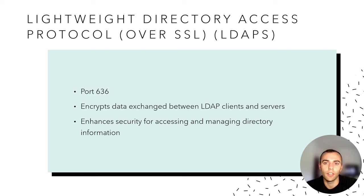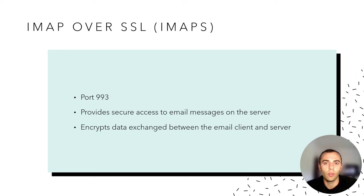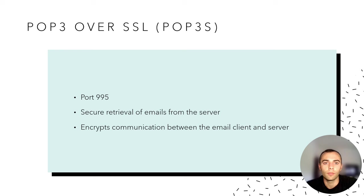Now let's talk about IMAP over SSL, or IMAPs, on port 993. IMAPs is a secure version of IMAP, offering encrypted communication for accessing and managing email messages stored on a server. Next is POP3 over SSL, or POP3S, on port 995. POP3S is a secure version of POP3, allowing users to securely retrieve emails from a server using encryption to protect the transmission.